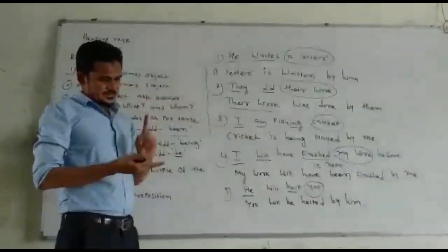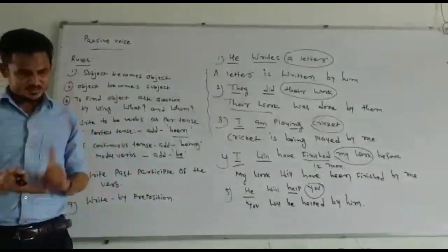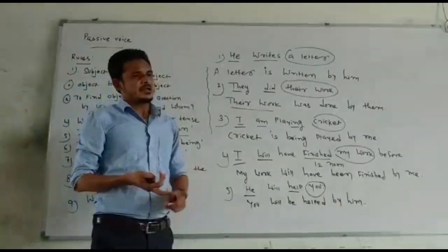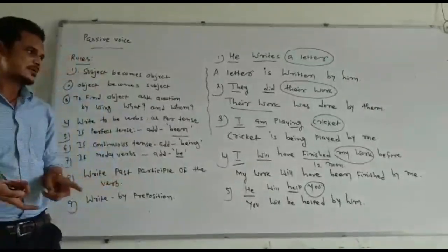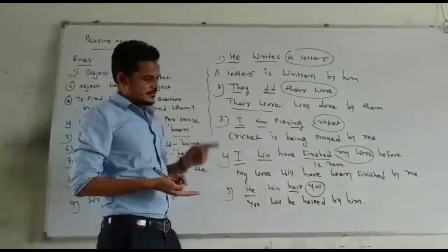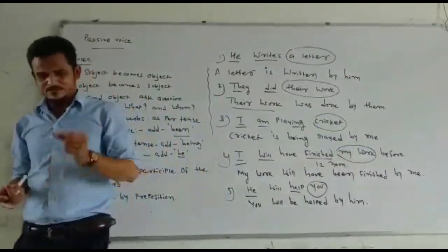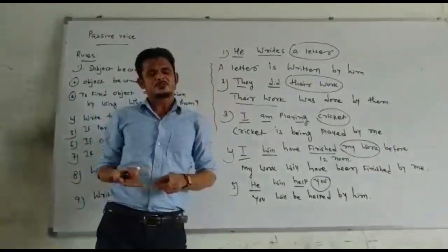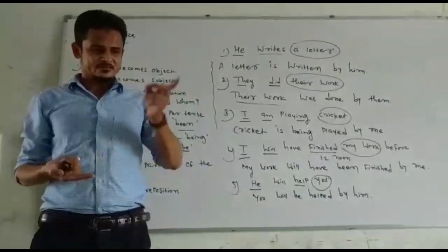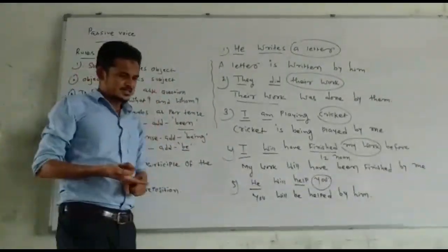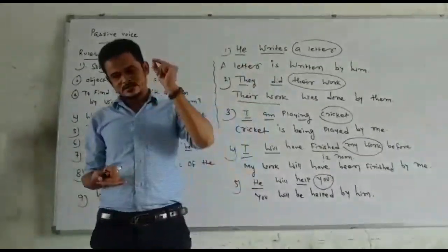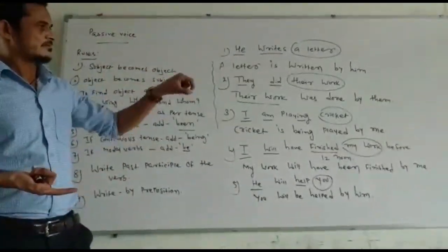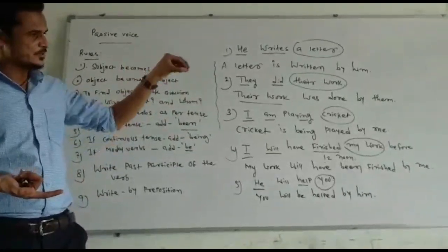To summarize: In simple present and simple past tense, write the be-verbs as per the tense and the past participle of the verb, then by preposition. If any perfect tense is given, add 'been' and write the past participle. If any modal verb is given, add 'be' and the past participle. For any continuous tense — present or past continuous — add 'being,' write the past participle, plus by preposition. In this way we can convert a sentence from active into passive. Thank you.